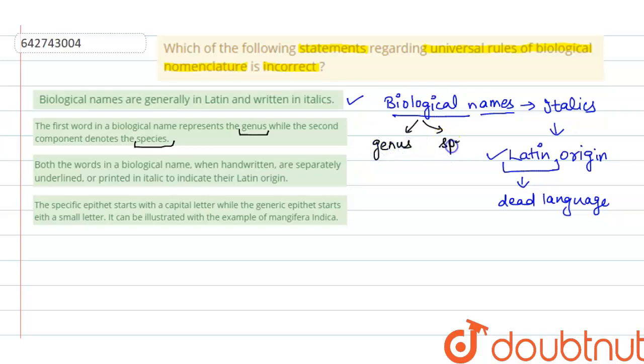the second indicates specific epithet, that is its species. So it is also a correct statement. Next is both the words in a biological name when handwritten are separately underlined or printed in italics to indicate their Latin origin. So the second point we just said that it is correct because they are printed in italics which indicates their Latin origin.